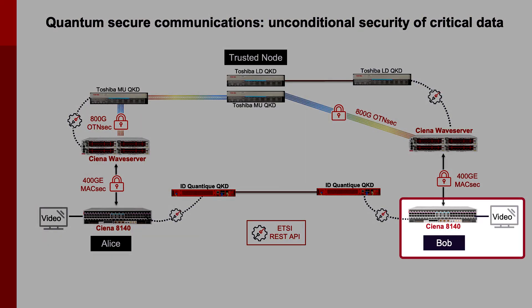Essentially, using trusted nodes, the two endpoints will have the same key that will be used by the WaveServer to complete the encryption end-to-end. The signal then transits over the 8140 at the far end and back to the video.